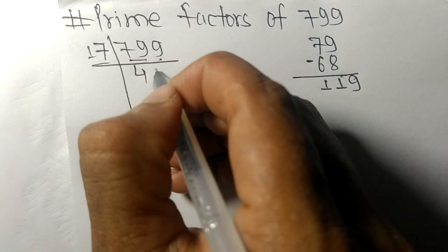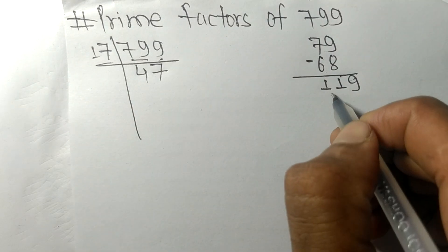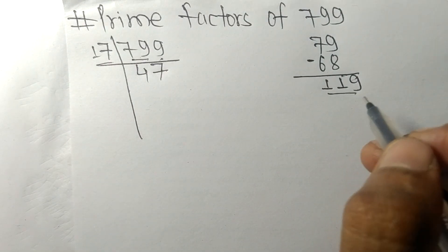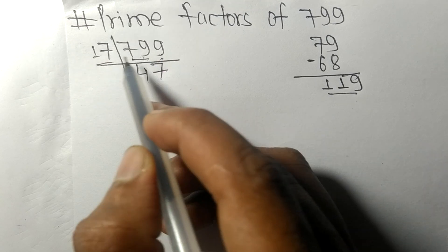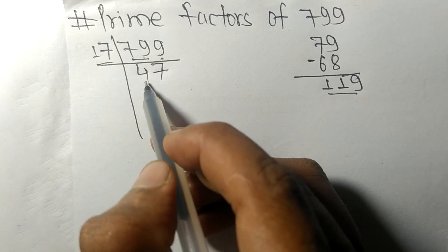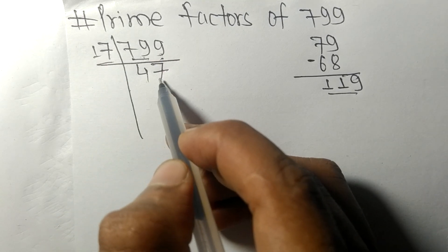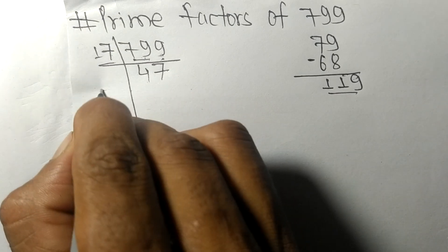17 times 7 means 119. On dividing 799 by 17 we got 47.